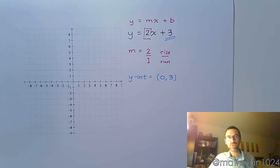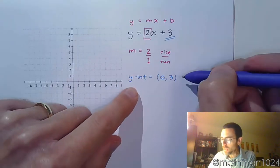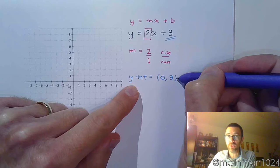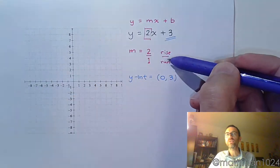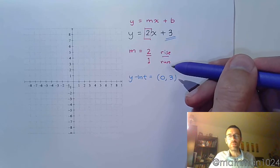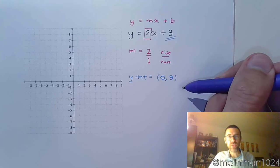When we graph, we have to understand which piece we use first. The y-intercept is an ordered pair, a point that we definitely know is on the graph. The slope tells us our movement, our direction, how to go. But we don't know how to move until we have a starting point, and that's the y-intercept.